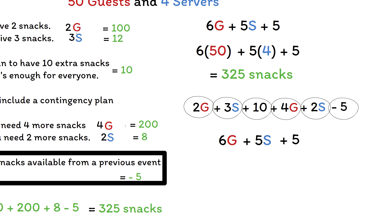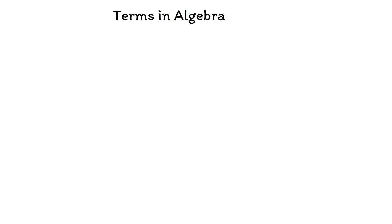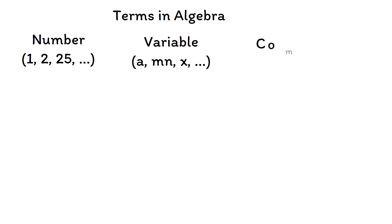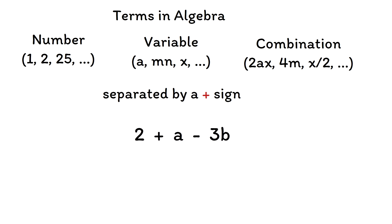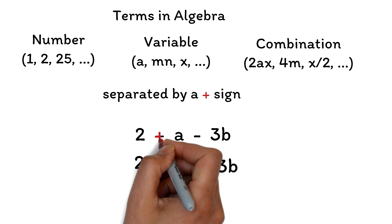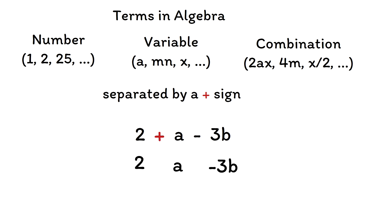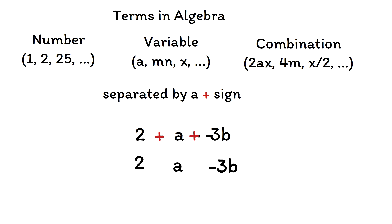Now that we know algebraic expressions are usually derived from real-life situations, let's practice adding and subtracting in algebra. To understand addition and subtraction in algebra, you need to fully understand what a term is. A term is a number, variable, or a combination of values multiplied or divided together that is separated by a plus sign. For example, in the expression 2 plus a minus 3b, the terms are 2, a, and negative 3b. The subtraction of a number is the same as the addition of a negative number, so minus 3b is the same as plus negative 3b.